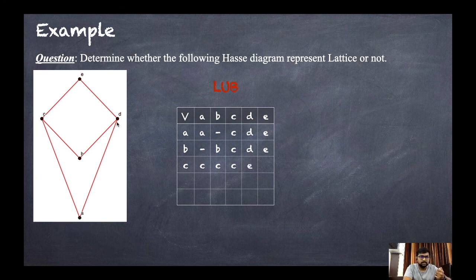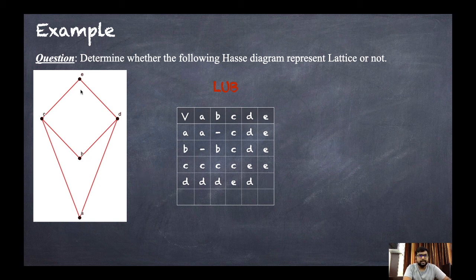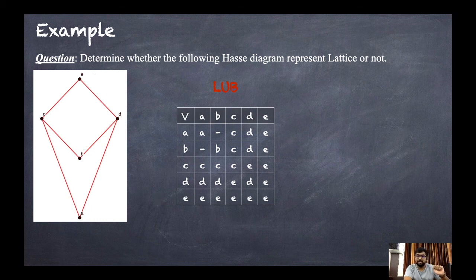LUB of c and d: the upper bound is e, so it is e. LUB of c and e is e. For d: d and a is d, d and b is d, d and c is e, d and d is d, d and e is e. For the e column, since e is the upper bound of the whole graph, all entries in the e row are e.